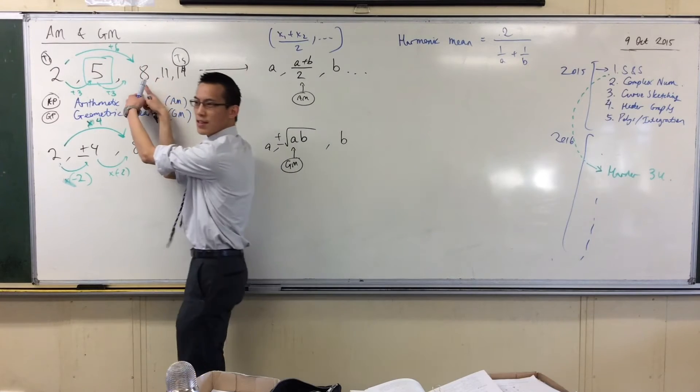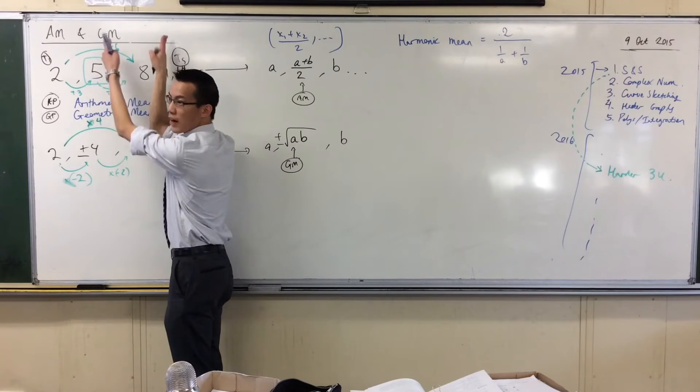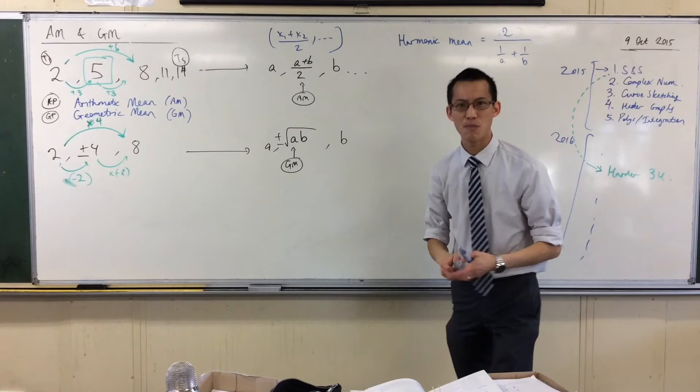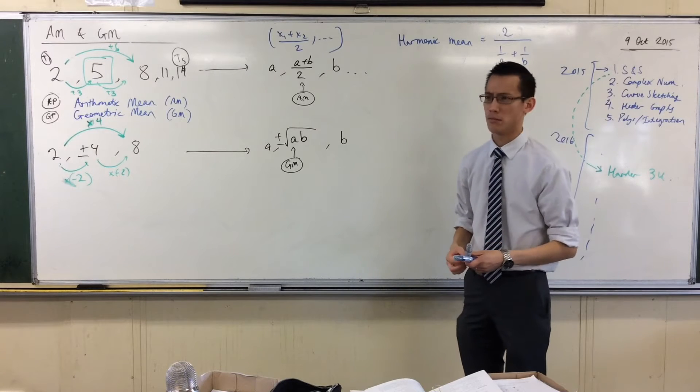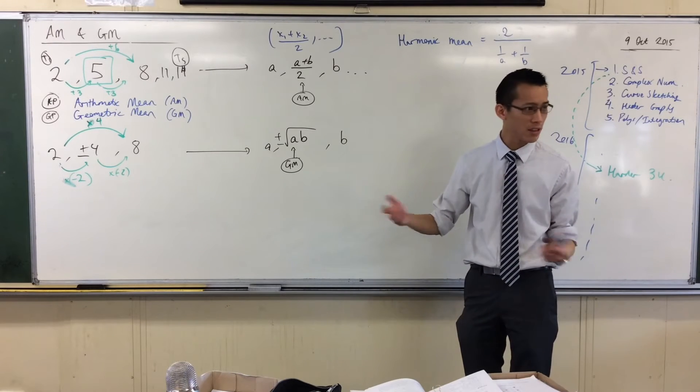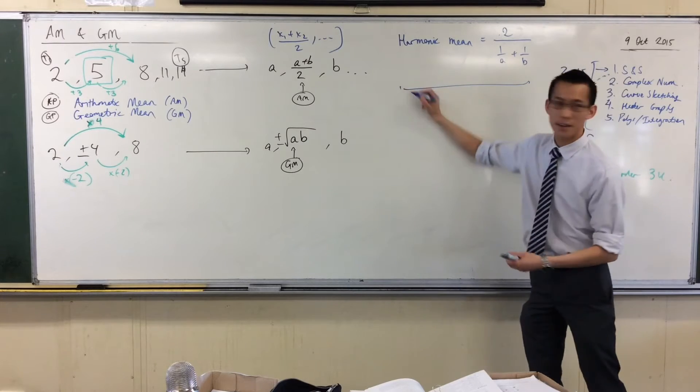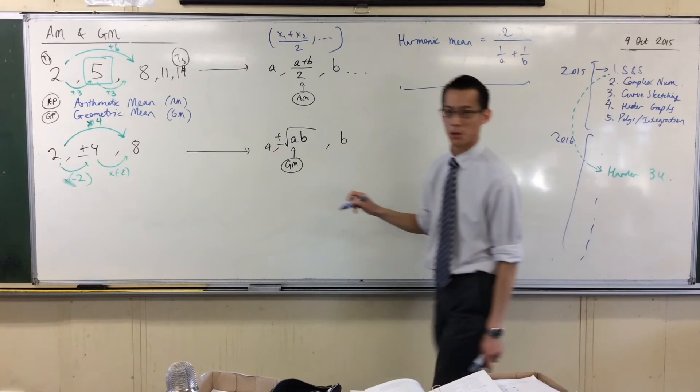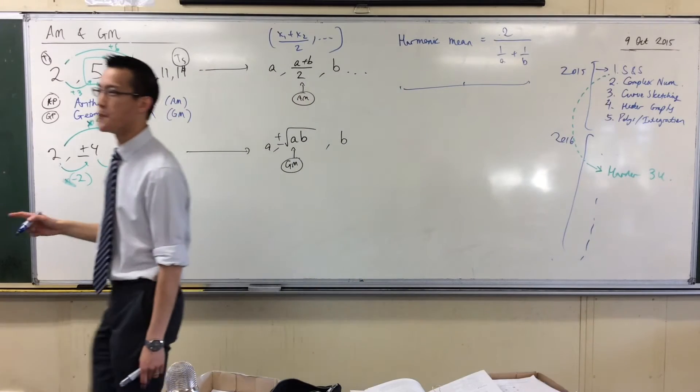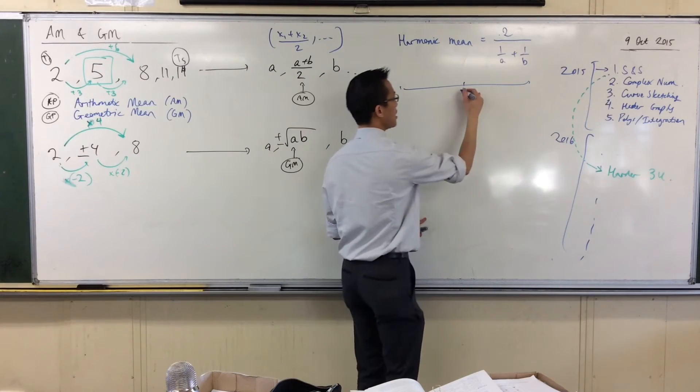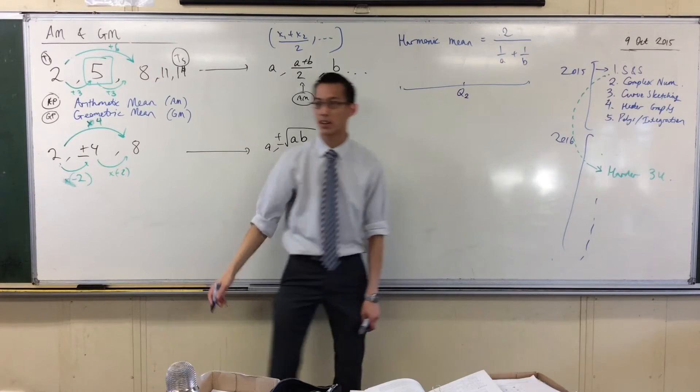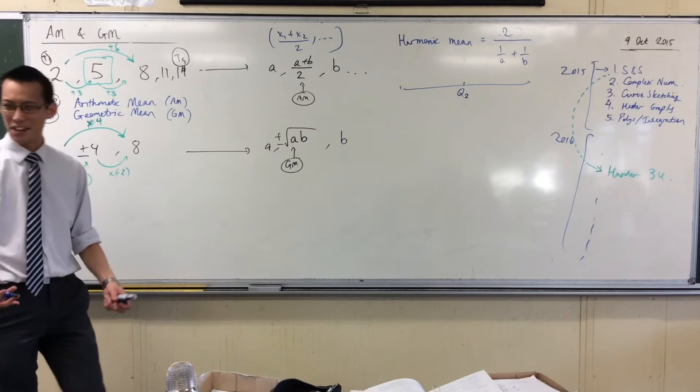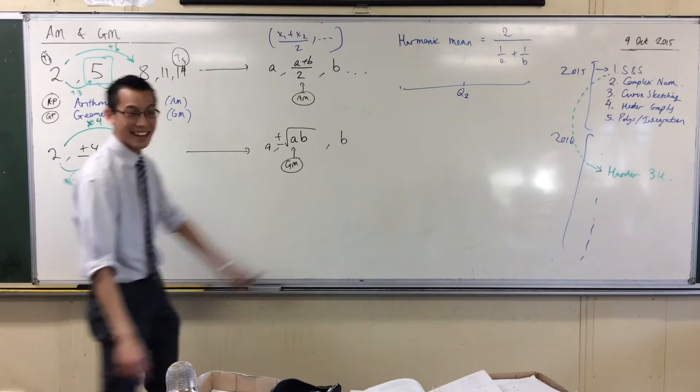But then what you're going to have to do is you're going to have to insert another pair of numbers to divide that up a little more. If you want to think way back in statistics, do you remember there are these things called quartiles? Interquartile range. So what you do is you've got like a set of data, right?